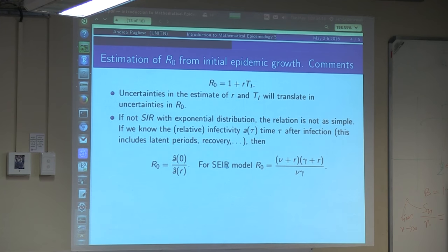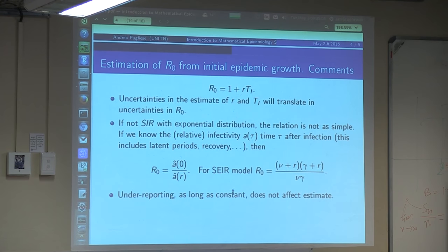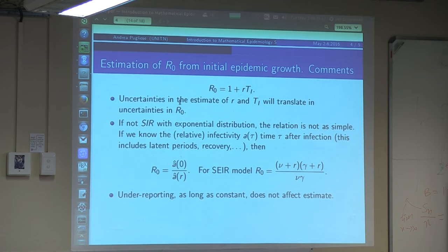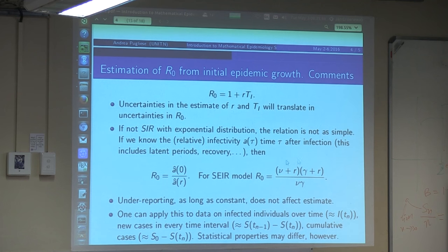If r is not particularly small, you would need some correction. For instance, in case you have a latent period, you should compute R0 through a modified formula. One nice thing of this way of estimating is that underreporting is not important. Because if only 10% of the cases are reported, as long as it's a constant 10% that doesn't depend on time, this will not affect the estimate of little r. Of course, we assume there is not a change in underreporting.